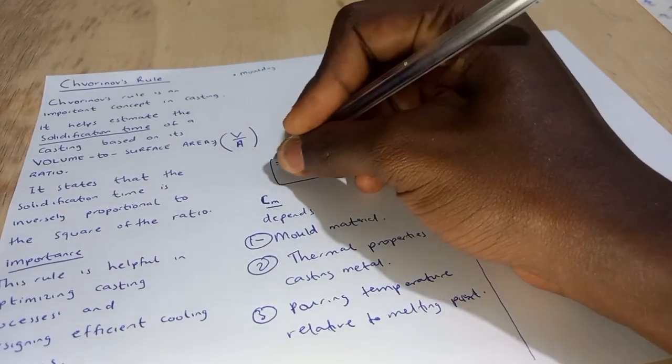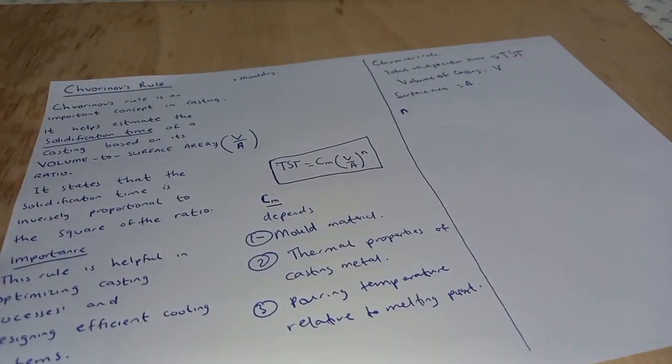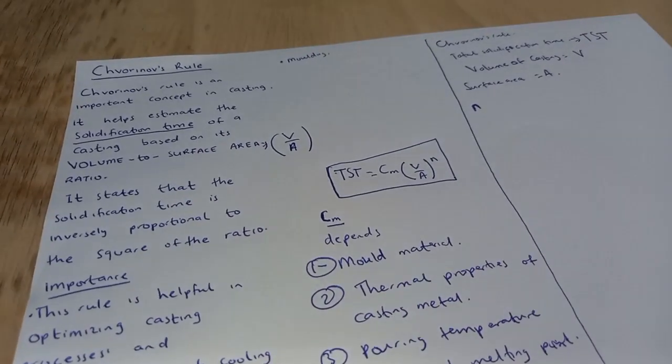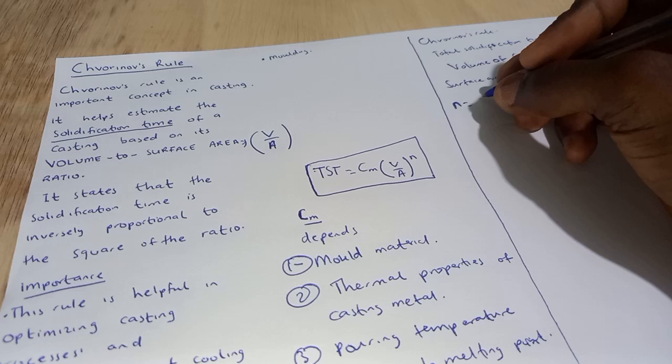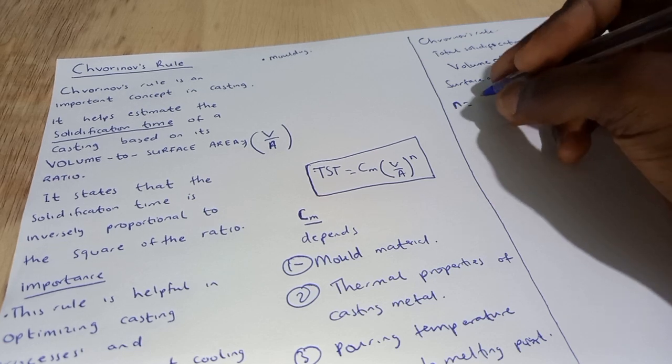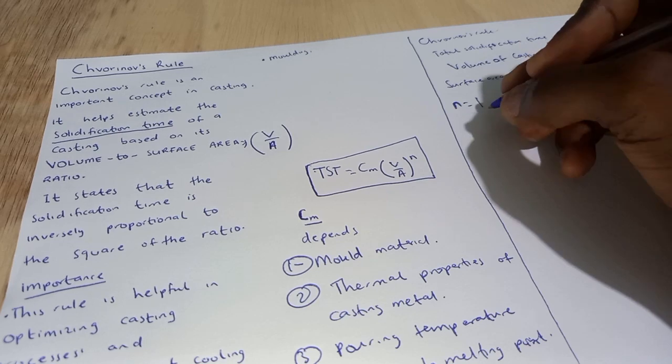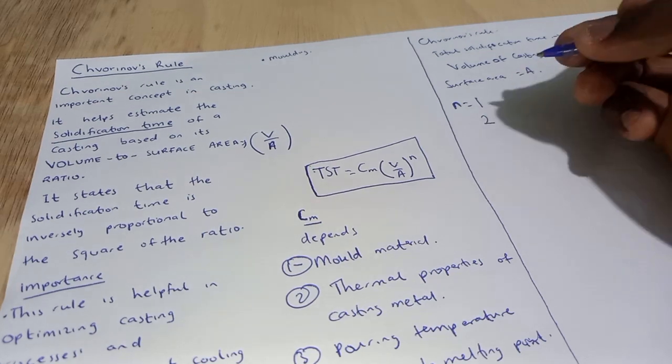And we have N. We are using this formula. We are explaining this formula. We have the letter N which denotes the exponent for either expandable or permanent mold casting. We normally use one for permanent mold casting and two for the expandable mold casting.